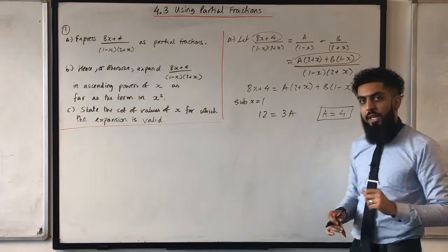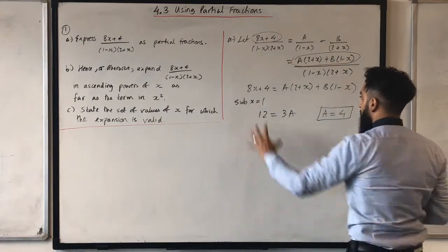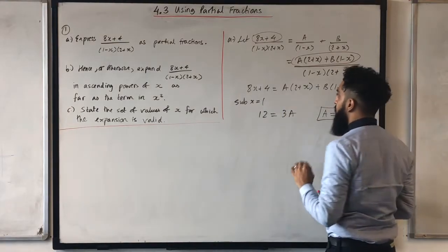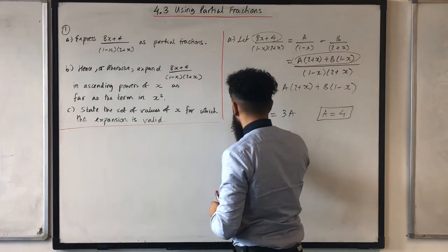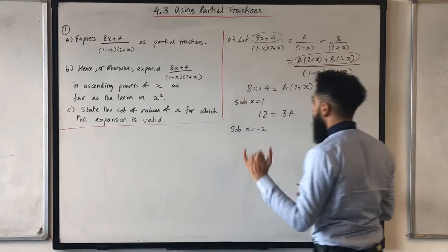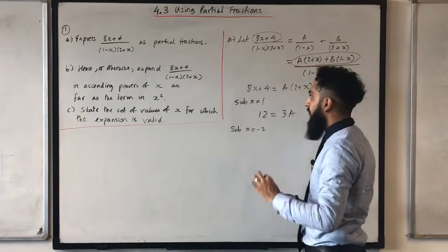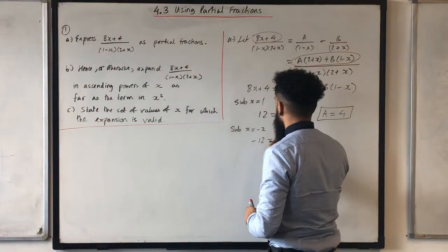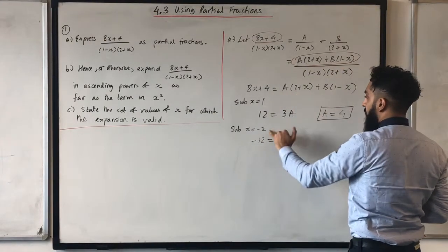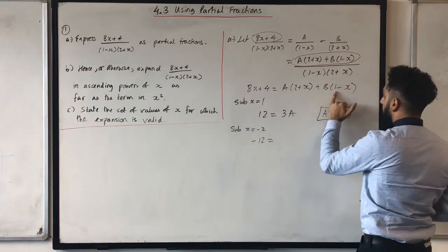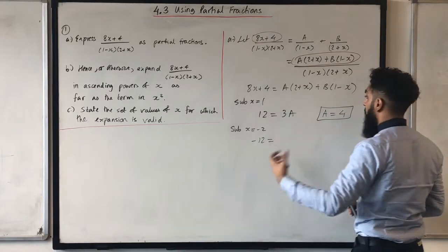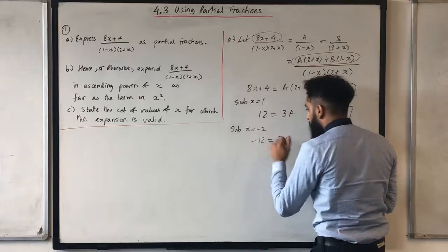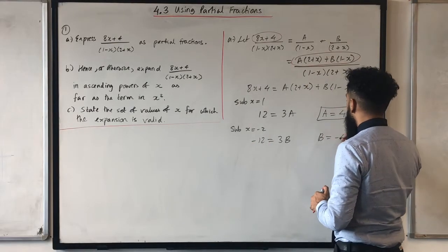Now to work out B, I go back to the equation and eliminate A by substituting x equals minus 2. Substituting x equals minus 2: 8 times minus 2 is minus 16, plus 4 is minus 12. Then (2 plus minus 2) times A is 0. And (1 minus minus 2) is 3, so 3B equals minus 12. Solving gives B equals minus 4.